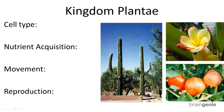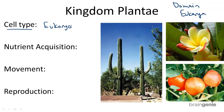The kingdom Plantae is made of all organisms organized in the domain Eukarya. The domain Eukarya implies the cell type — all plants are made of eukaryotic cells. So they are eukaryotic, meaning that their cell structures are complex.